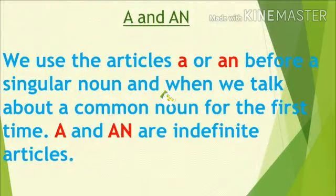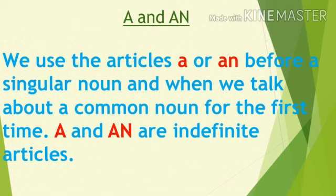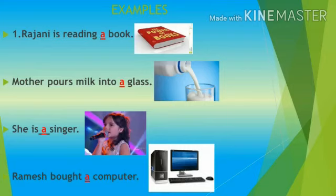First, A and AN. We use the article A or AN before a singular noun and when we talk about a common noun for the first time. A and AN are indefinite articles. We use A when the noun is singular and begins with a consonant sound. Let us see a few examples: Rajini is reading a book. Mother pours milk into a glass. She is a singer. Ramesh bought a computer.